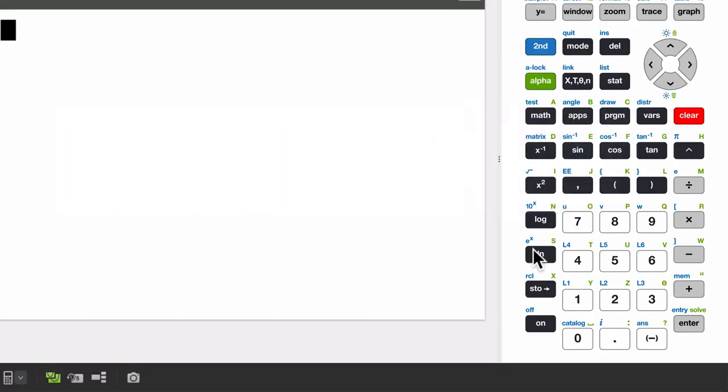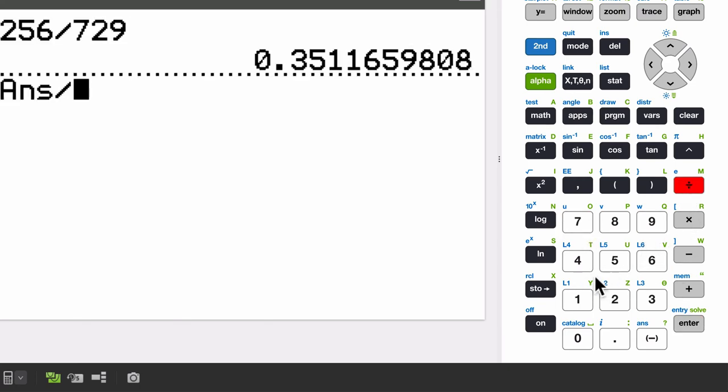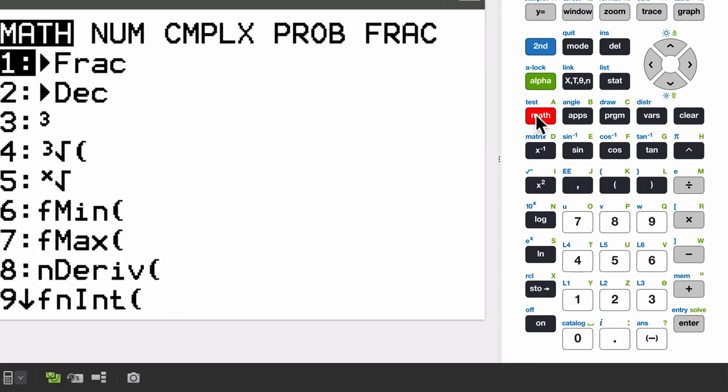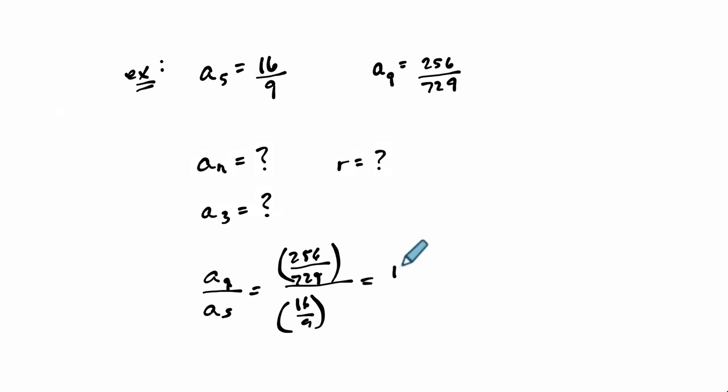And there are nice ways to reduce this. You can also do it on a calculator. So you have 256, the first fraction, divided by 729. Hit enter. Then I'm going to divide that by 16 over 9. I'm going to put parentheses 16 over 9. It gives me a decimal. Then if I hit math and go to fraction, it'll tell me what fraction I'm dealing with. In this case, 16 over 81. And that's what this is.